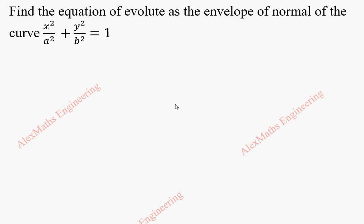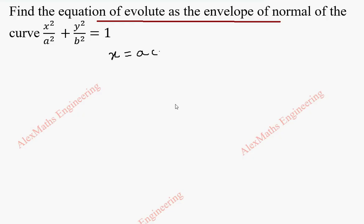Hi students, this is Alex here. In this video, we are going to find the equation of the evolute as the envelope of normals to the given ellipse. The parametric form for x squared by a squared plus y squared by b squared equal to 1 is x equal to a cos theta and y equal to b sine theta. We have to find dy by dx.